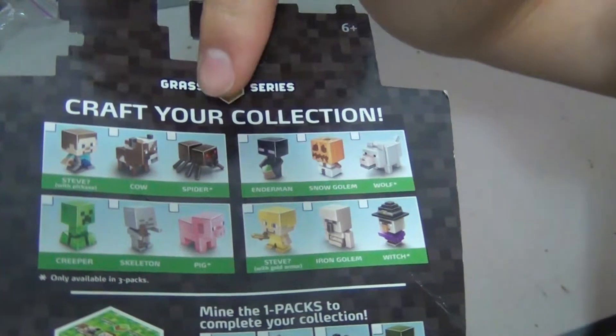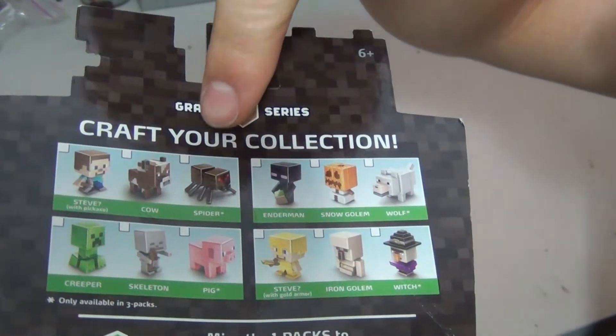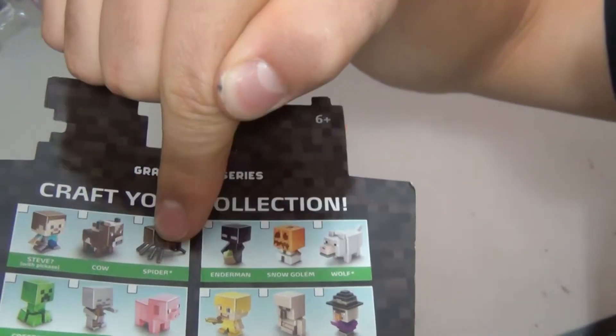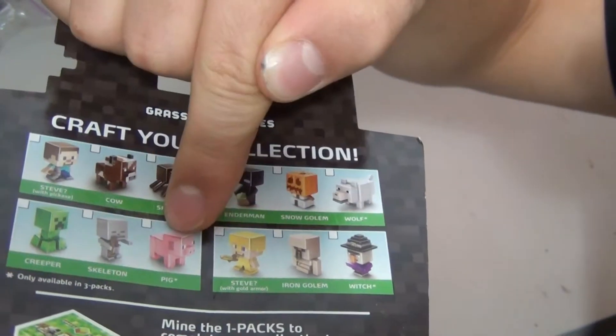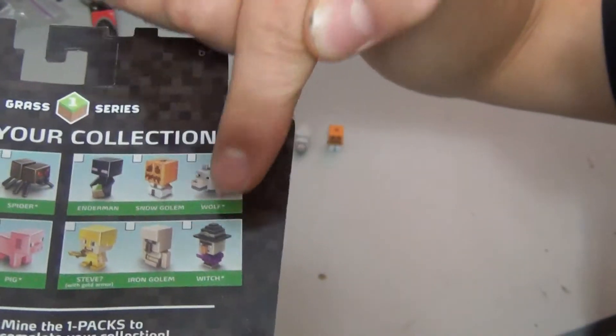So I'm going to guess that they're going to go into different blocks and stuff like that. There's four different kinds of three-packs, and in each three-pack there's an exclusive figure that only comes in three-packs. For this one it's a spider, for this one it's the pig, for this one it's the wolf, and for this one it's a witch.